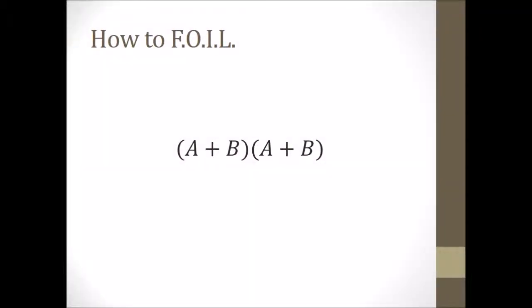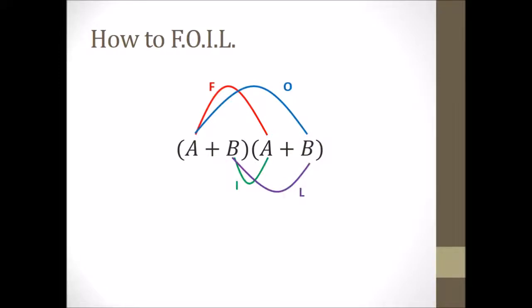To begin, let's learn how to FOIL — F-O-I-L — and that stands for the first terms, the outside terms, the inside terms, and the last terms. What you do is multiply those terms together. So for instance, the first would be A times A, and then you put them all together: A times A, AB, BA, and BB.